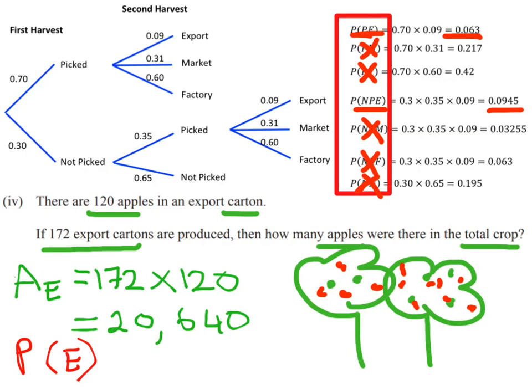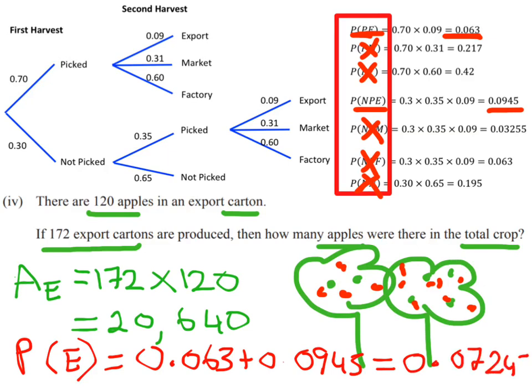We need to combine that together to find the probability for export. We're going to do 0.063 plus 0.0945, and that gives us a probability of 0.07245.